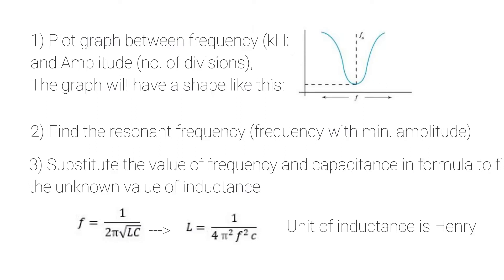Graphs and calculations: Then you have to plot the graph between the frequency and amplitude. The graph will have a shape like this, and you will find the resonant frequency, which is the frequency with minimum amplitude. And then you will substitute the value of frequency and capacitance in the formula to find the unknown inductance.